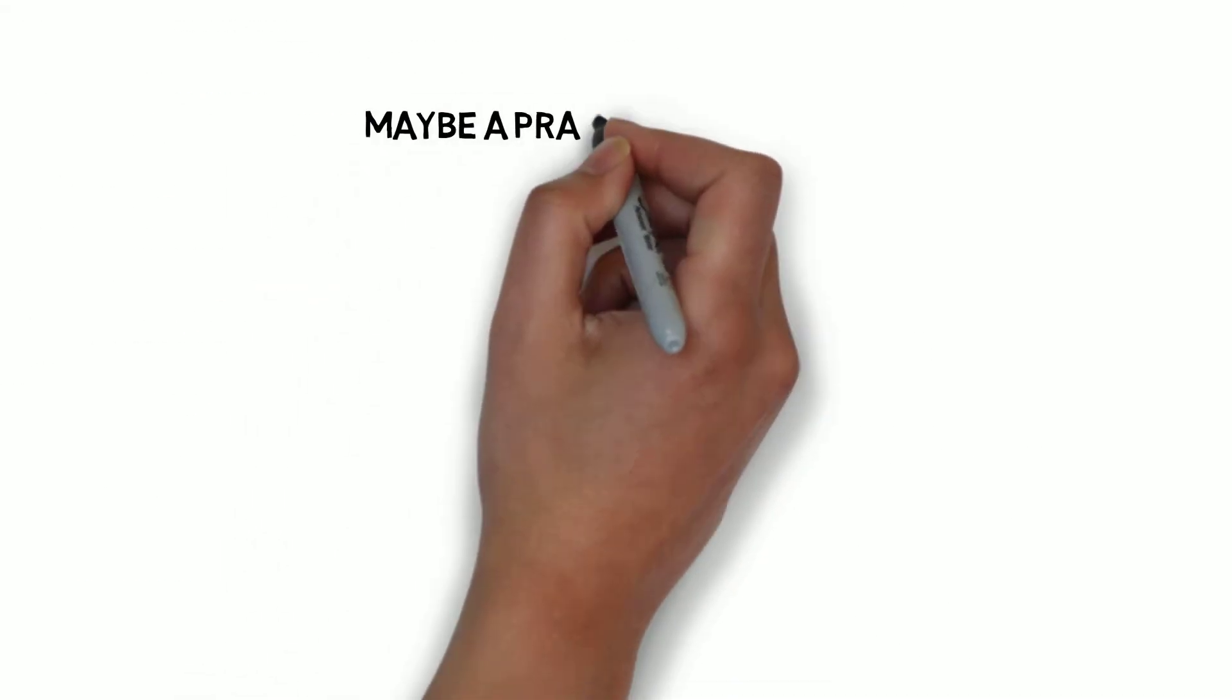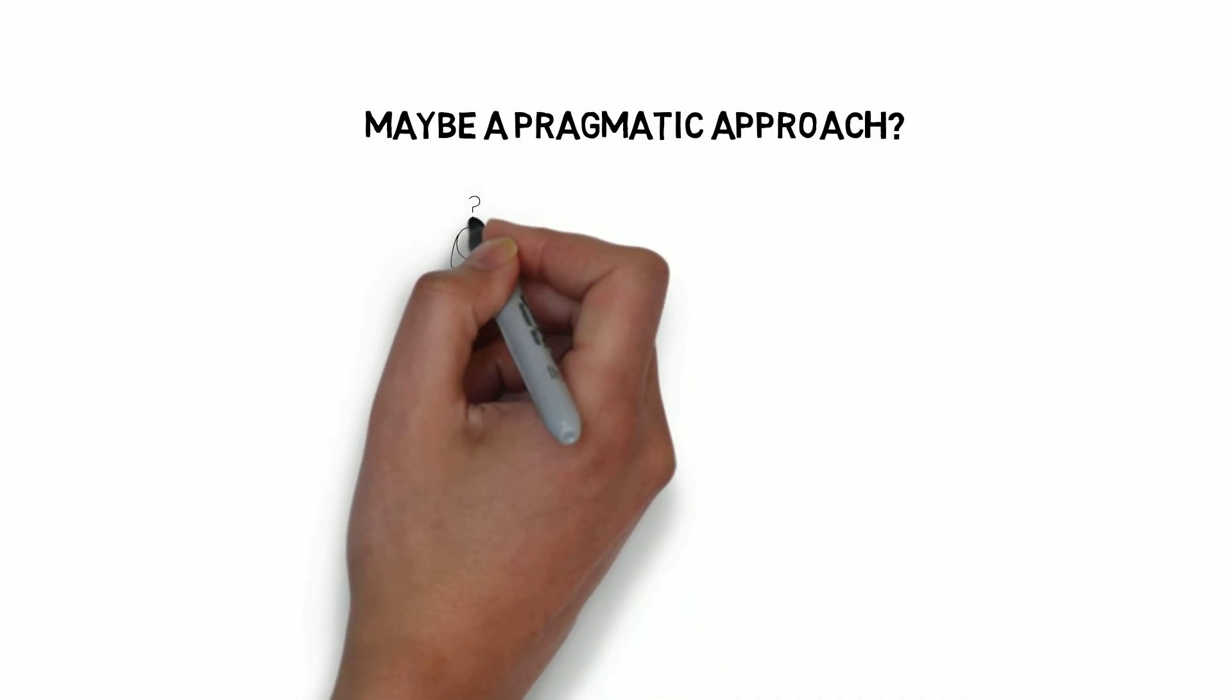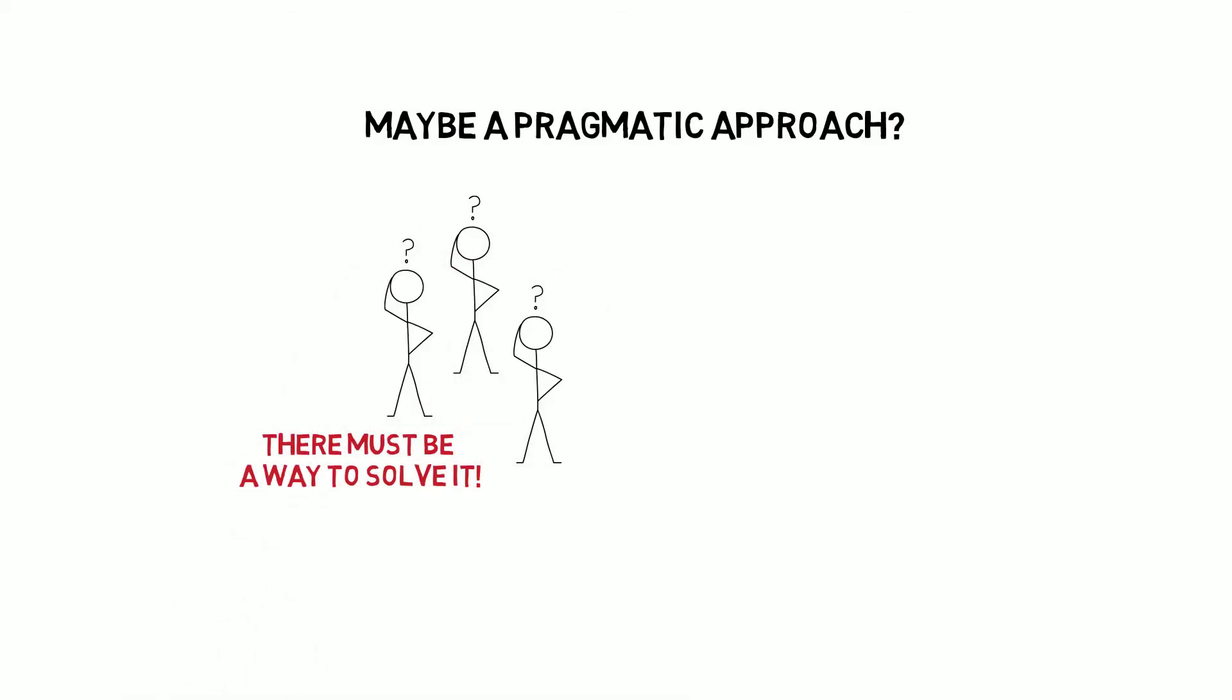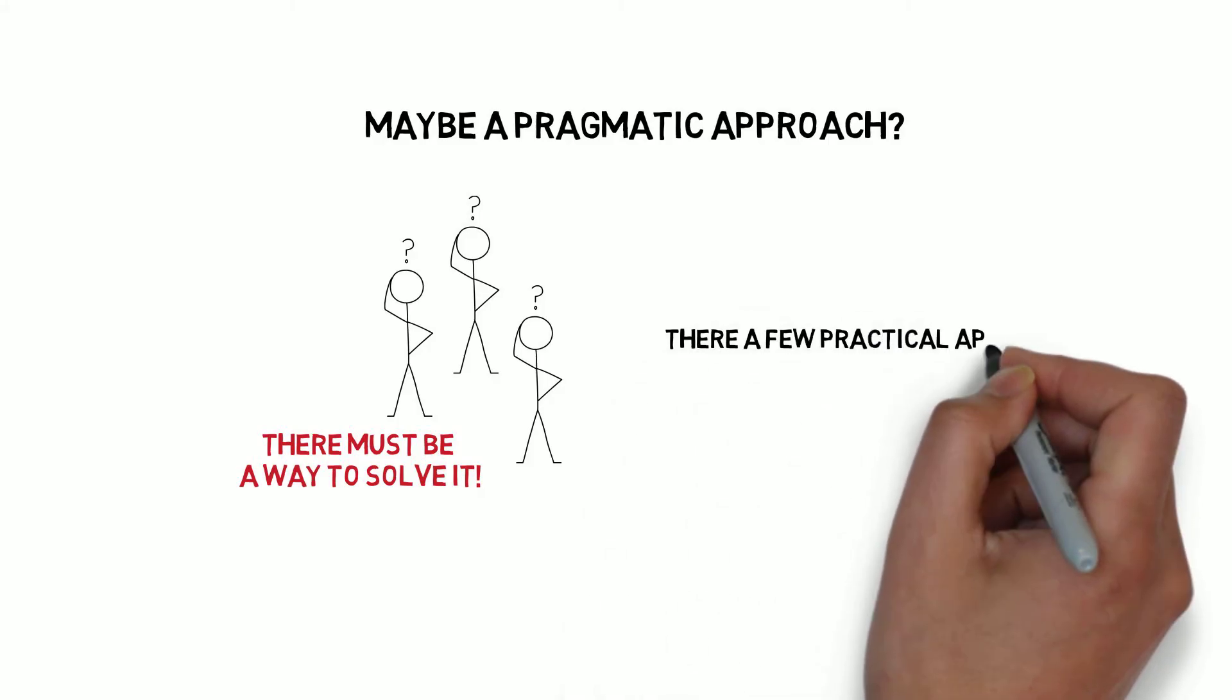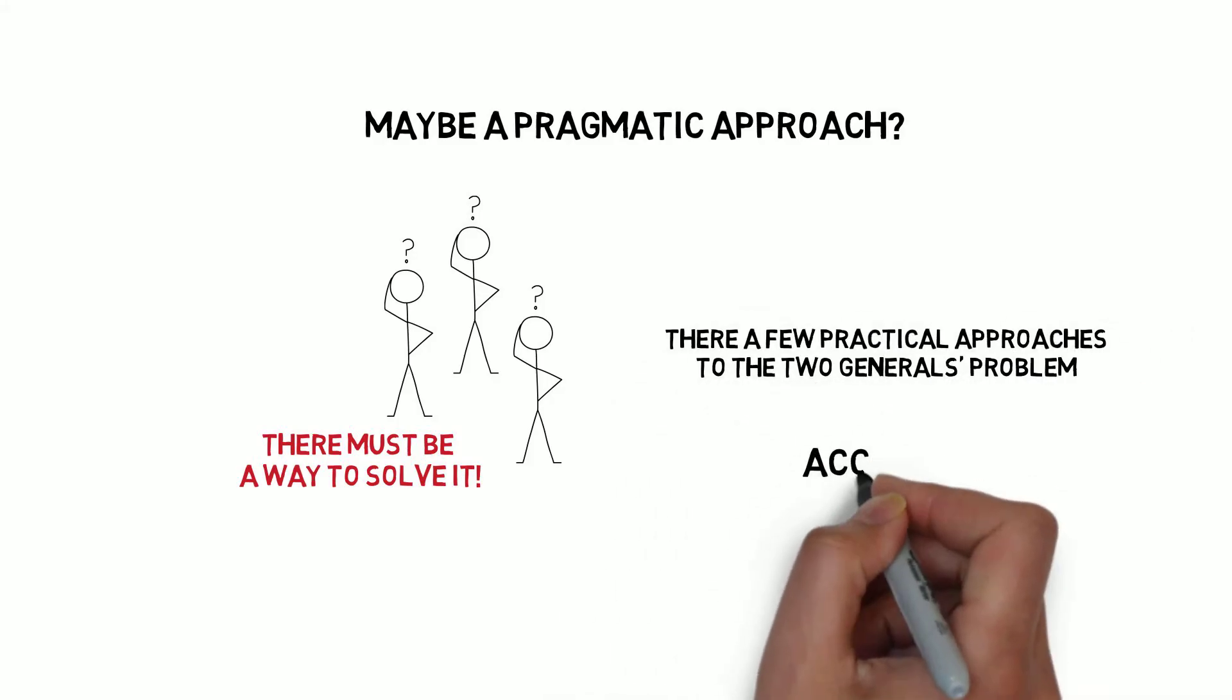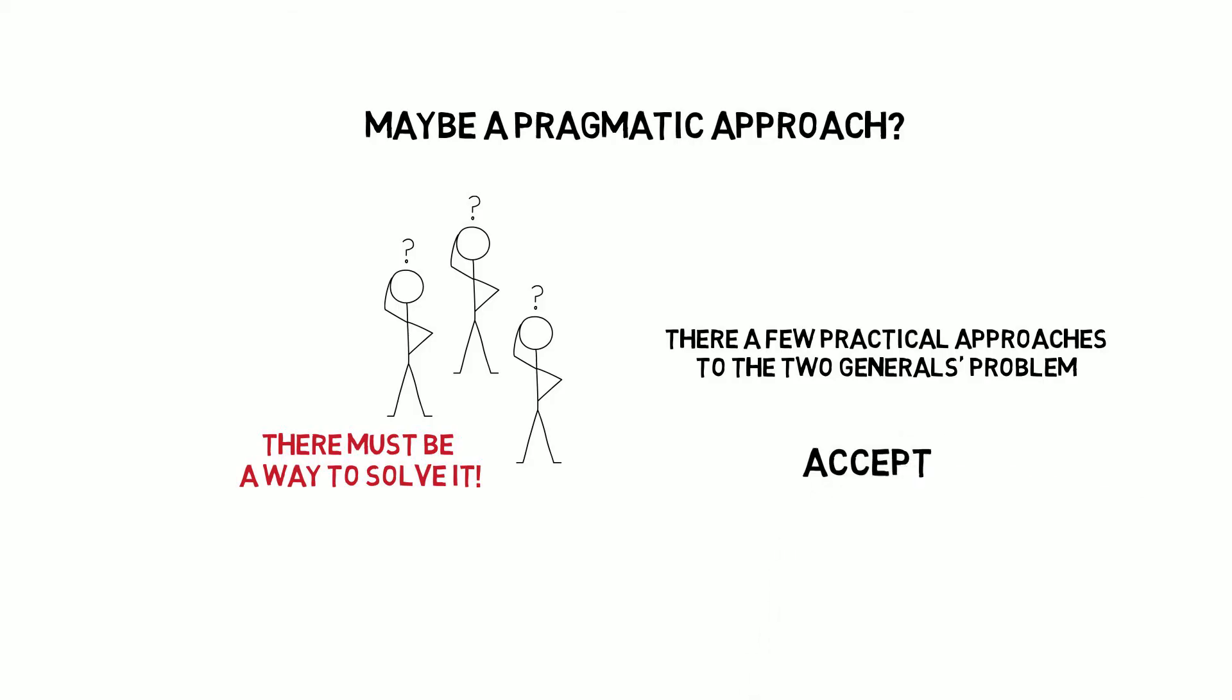So maybe a pragmatic approach? I'm happy you're not giving up. Unsurprisingly, there was a number of people trying to solve the unsolvable two generals problem, and they came up with a few practical approaches. The main assumption here is to accept the uncertainty of the communication channel and mitigate it to a sufficient degree.